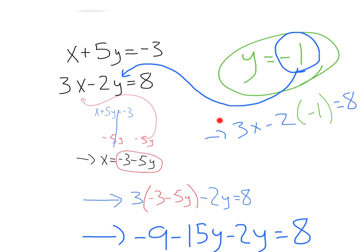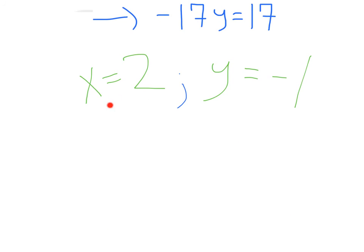Doing that, we'll get 3x minus 2 times negative 1. Placing that in for that y, negative 2 times y or negative 1 equals 8. Going from there, we'll get 3x plus 2 equals 8. Subtract 2, then divide by 3. And we'll solve that to get a value of x equals 2. And there we are. We've got our final answers, x equals 2, y equals negative 1, solved.